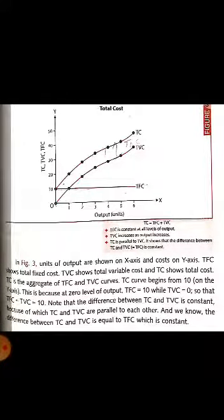TVC is total variable cost, TC is total cost and TFC is total fixed cost. TC is a combination of TFC and TVC. TC starts from 10 from y-axis because at zero level of output, total fixed cost is 10 and total variable cost is zero.